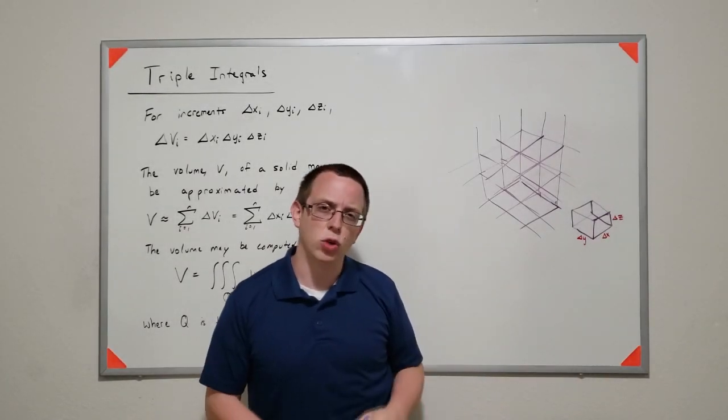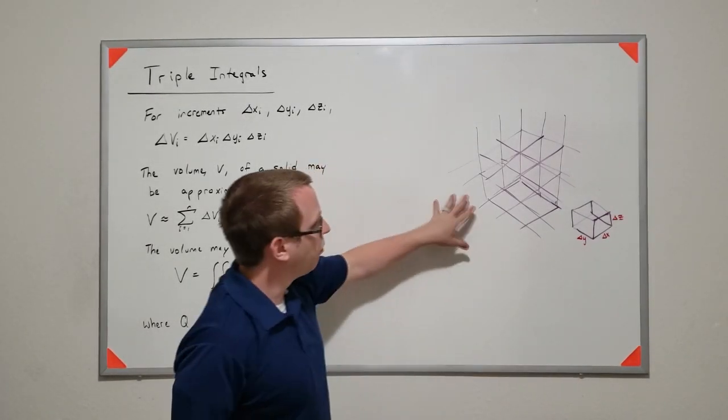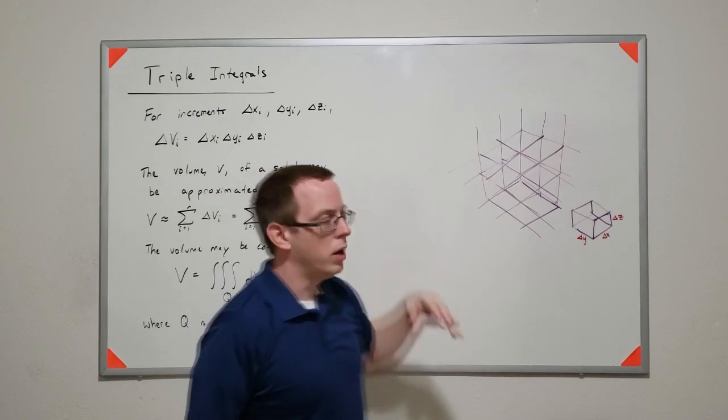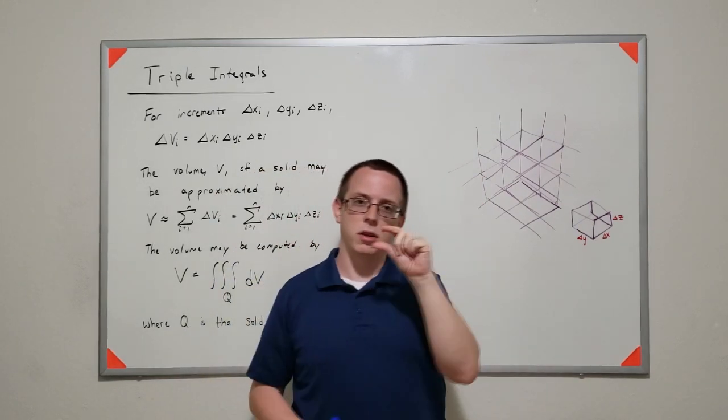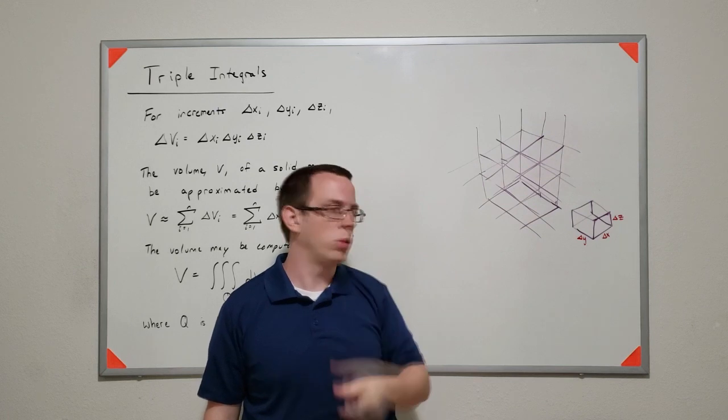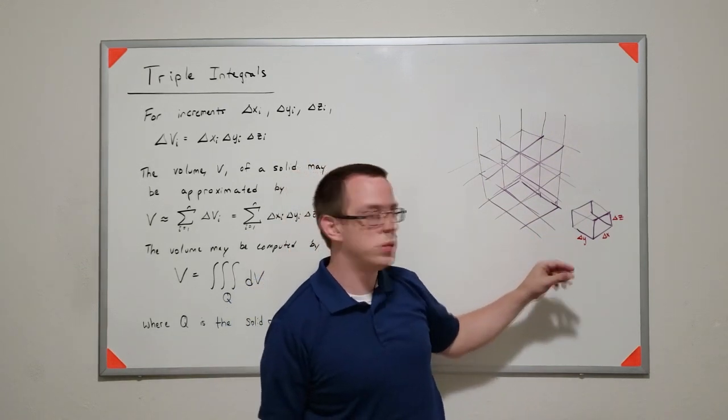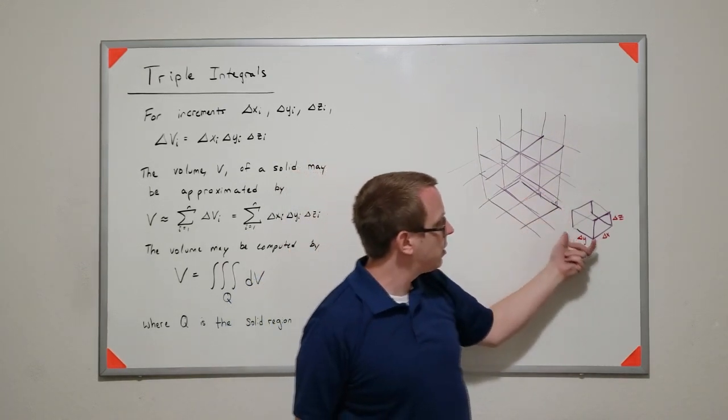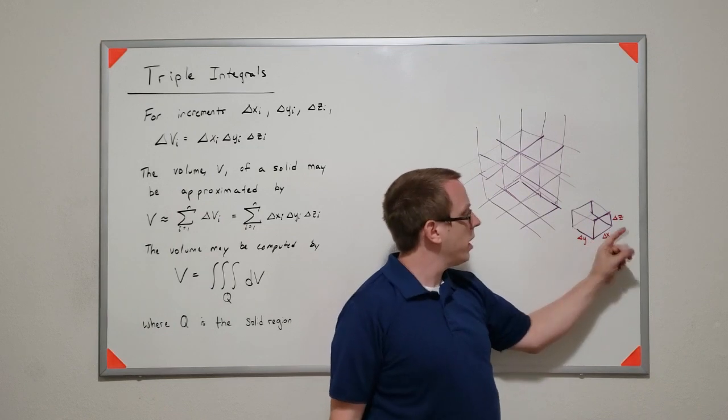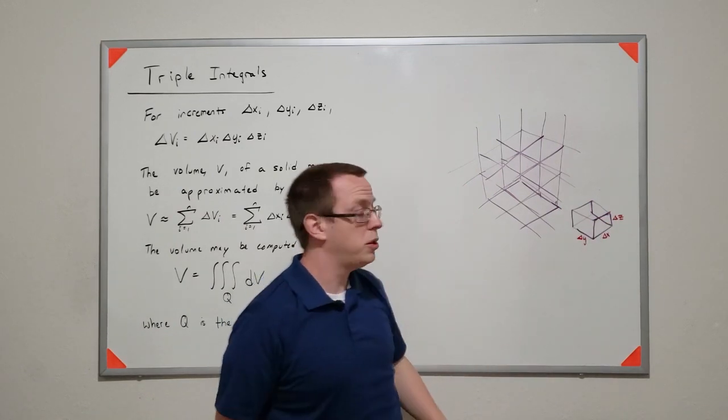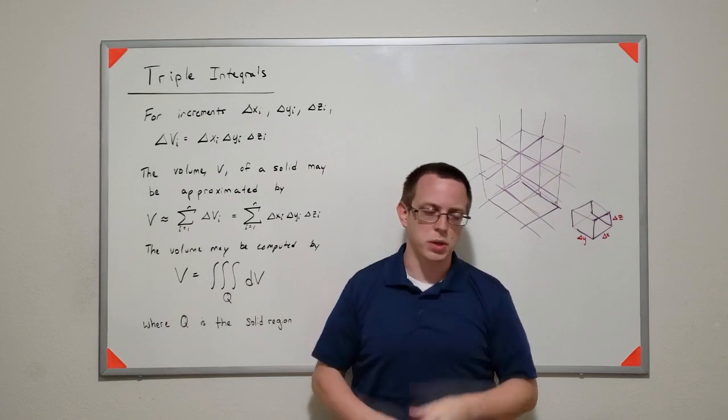So let's say for a moment that I have a grid of values, like this purple grid here, and it's a series of rectangular prisms. They don't necessarily have to be cubes. In this particular case, delta y, delta x, and delta z are actually different lengths and heights, but they are rectangular prisms.